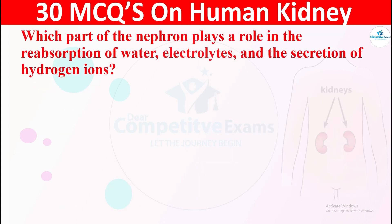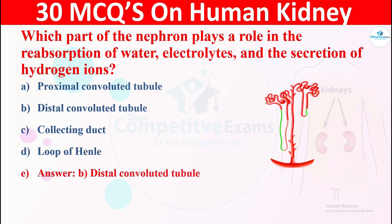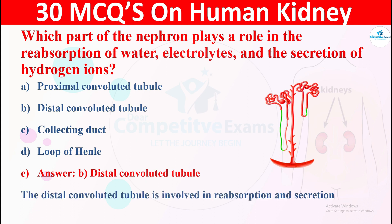Question 22: Which part of the nephron plays a role in the reabsorption of water, electrolytes and the secretion of hydrogen ions? Options are: A) proximal convoluted tubule, B) distal convoluted tubule, C) collecting duct, or D) loop of Henle. The right answer is distal convoluted tubule. The distal convoluted tubule is involved in reabsorption and secretion processes.